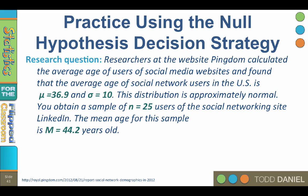To use the z-test, we need to know the standard deviation of the population. Researchers at the website Pingdom calculated the average age of users of social media websites and found that the average age of social networking users is mu equals 36.9 and sigma equals 10. I need to add that I made up that standard deviation — almost never do we know the true standard deviation of the population. My best estimate of the true standard deviation, based on these data, would be about 3.72 years.